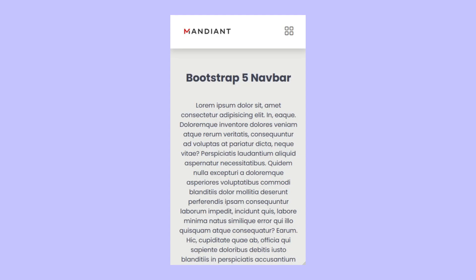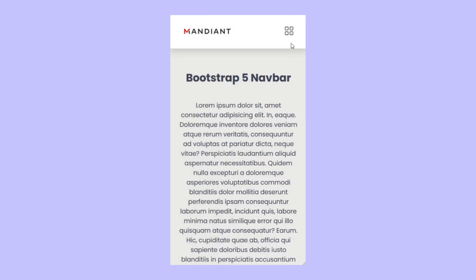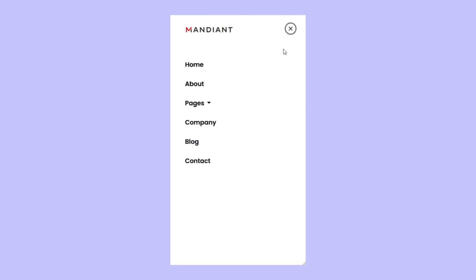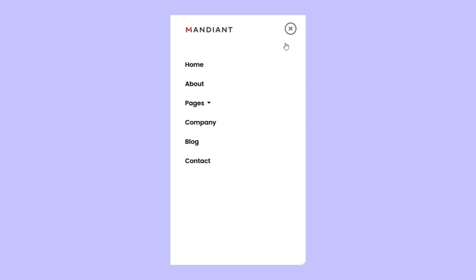For mobile view, the navbar will be initially hidden. Only when the user clicks the toggle icon will our navbar component be visible from the right side. Similarly, to close the navbar, the user has to click on the close button, which hides the navbar with a smooth transition.